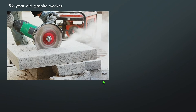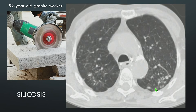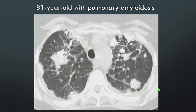Case: a 52-year-old granite worker. There is calcified mediastinal lymphadenopathy, and the nodularity shows up more prominently than the septal thickening — minimal subtle septal thickening with a decent amount of nodularity. With this occupational history, this is silicosis. As a rare cause of nodular septal thickening, an 81-year-old has calcified masses and nodules in both lungs with septal thickening and intervening nodularity — this is a case of pulmonary amyloidosis.